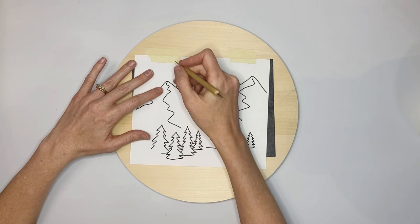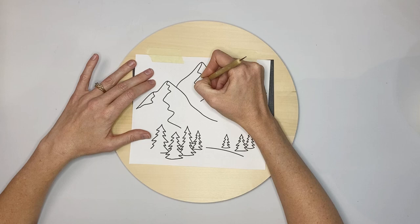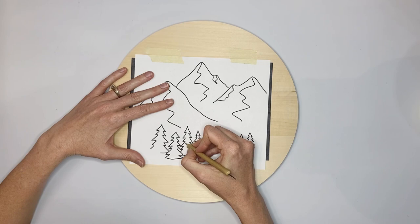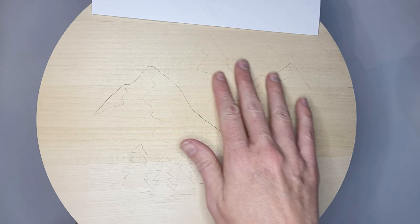So you can see where you have transferred over the pattern and where you haven't. Trace over this lightly by the way. You don't need this to be crazy dark.